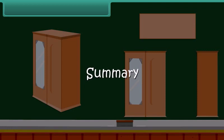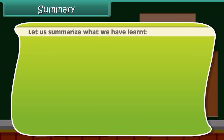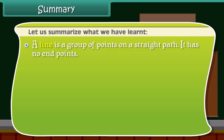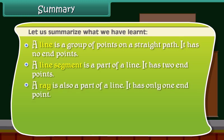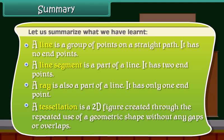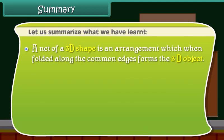Let us summarize what we have learned. A line is a group of points on a straight path — it has no end points. A line segment is a part of a line — it has two end points. A ray is also a part of a line — it has only one end point. A tessellation is a 2D figure created through the repeated use of a geometric shape without any gaps or overlaps. A net of a 3D shape is an arrangement which, when folded along the common edges, forms the 3D object.